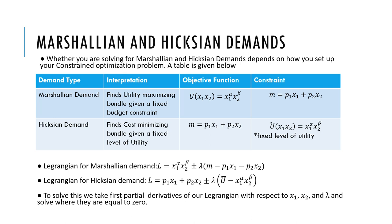When we're asked to solve for our Marshallian demands, we're trying to find the utility-maximizing bundle given a fixed budget constraint. When solving for our Hicksian demands, we have to find the cost-minimizing bundle given a fixed level of utility. Solving for each one really depends on how we define our objective function and our constraint function in the Lagrangian multiplier.